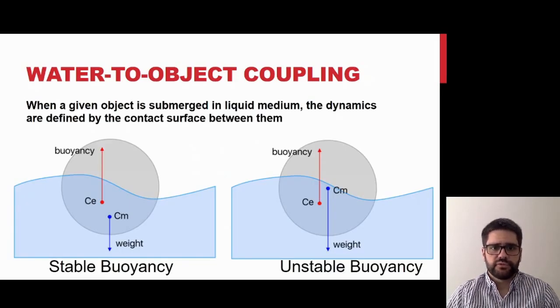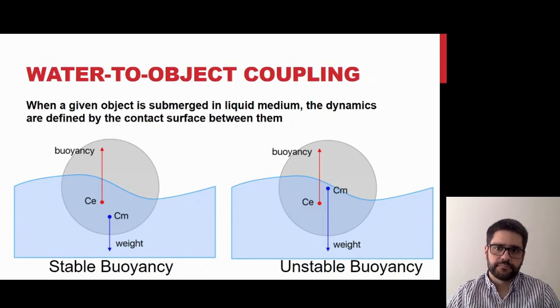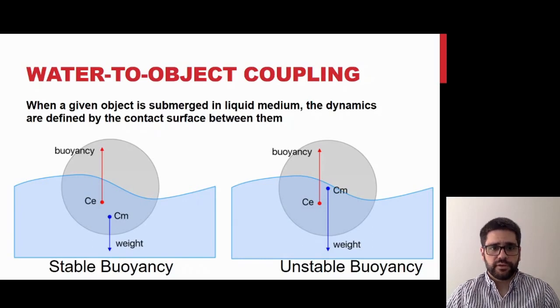The relative position between the center of buoyancy and the center of mass determines if the movement is stable or not. If the center of buoyancy is located above the center of mass, the movement is stable. This means that the object tends to recover its original position. In the other case, the object will not tend to recover its initial position.